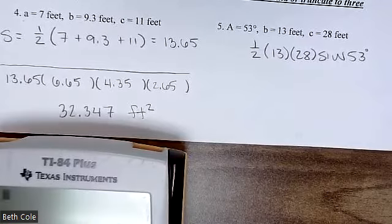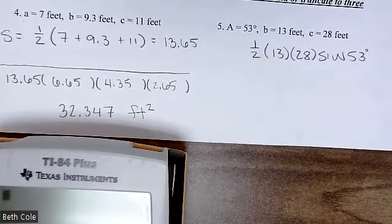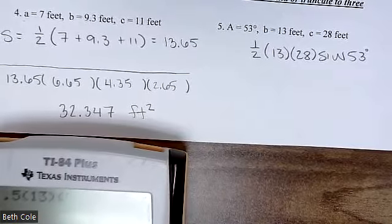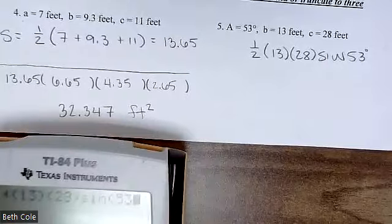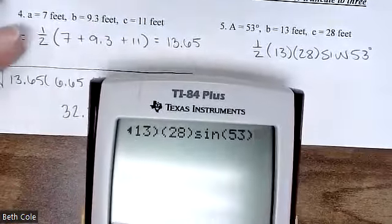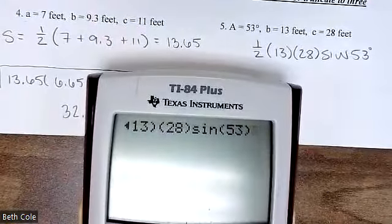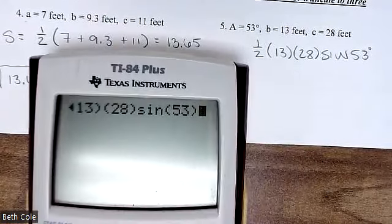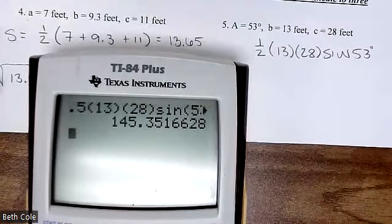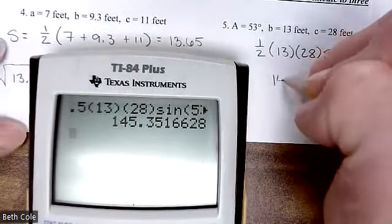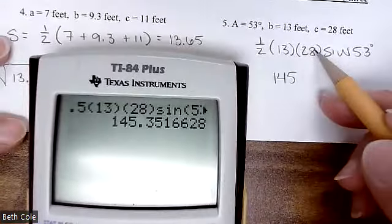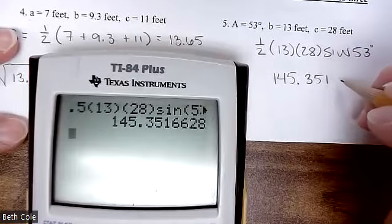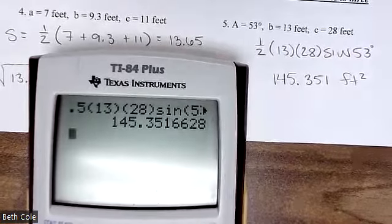It's one-half times 13 times 28 times sine of 53 degrees. I like that one a little better — it's shorter. You can't use sine, cosine, or tangent unless you have an angle, because it's always the trig function of the angle. I got 145 square feet — one of the sides is 28, so that's not unreasonable.